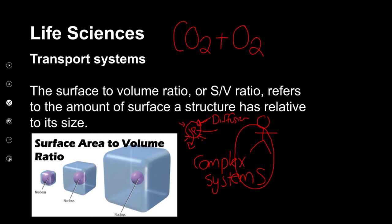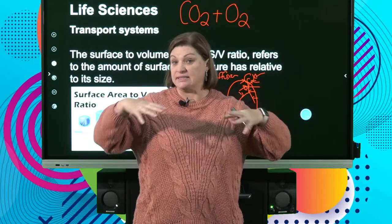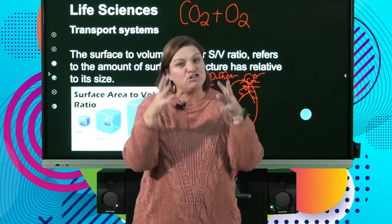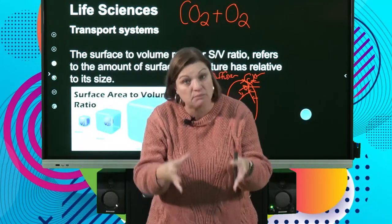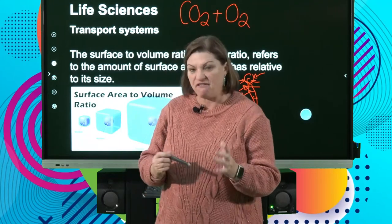I am quite big, right? I have got this layer of skin around me, and I'm also very busy. So I'm going to need to have lots of oxygen. Unfortunately, oxygen can't just come in around my skin — I need to have a serious system that's going to get the oxygen into my body and around it. The bigger an organism gets and the more complex it is, we need to have special systems in place that can do things effectively.